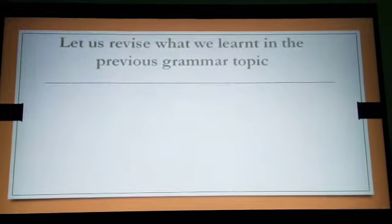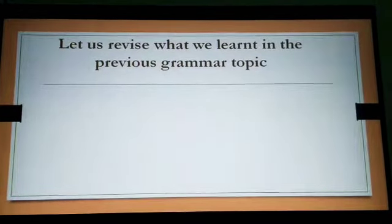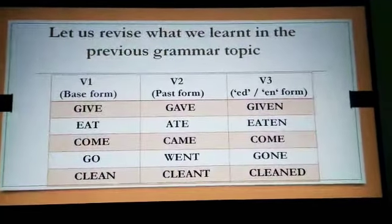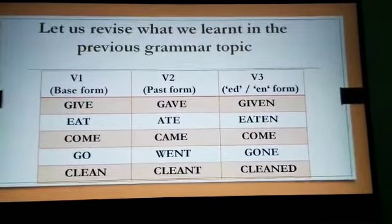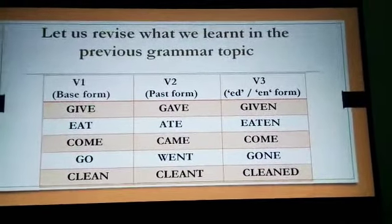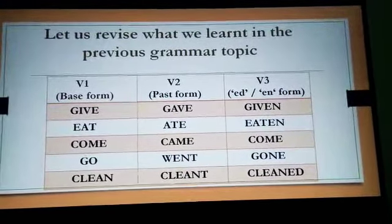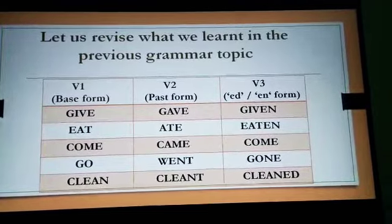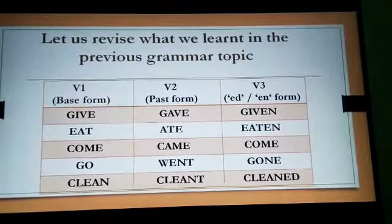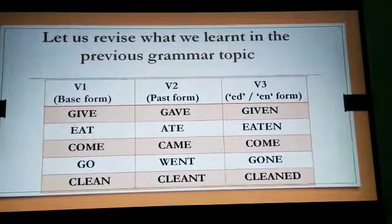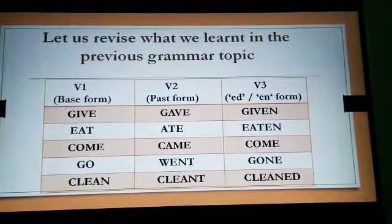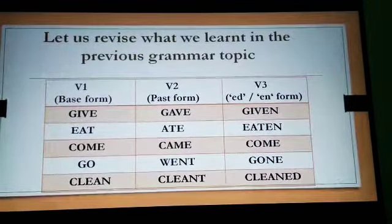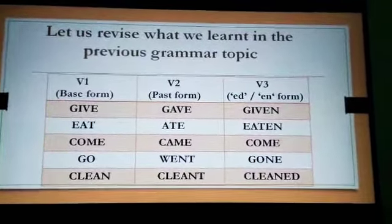Before going to the topic, let us revise what we learnt in the previous grammar topic, i.e. the tenses and its types. In that topic we saw the three forms of verbs, i.e. V1, V2 and V3. In the V1 form of the verb, the words are in the base form as given in the table below.